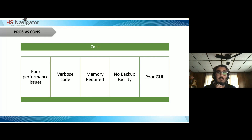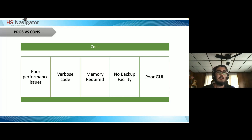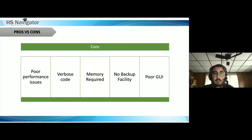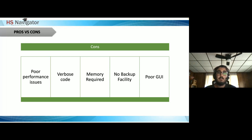Java requires a lot of memory — even with garbage collection and automatic memory management, the memory required is still substantial compared to many other languages. There's also no backup facility, making it hard for code to be backed up once written. Java also has a poor GUI because the GUI builder is weak and can't build complex UIs as well as languages like C#, Python, or R.